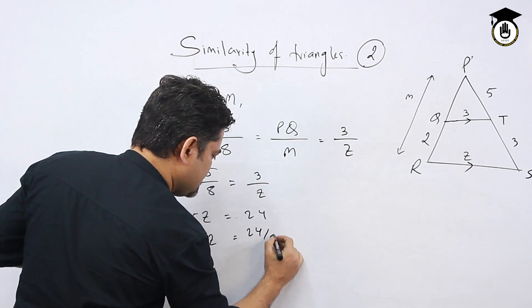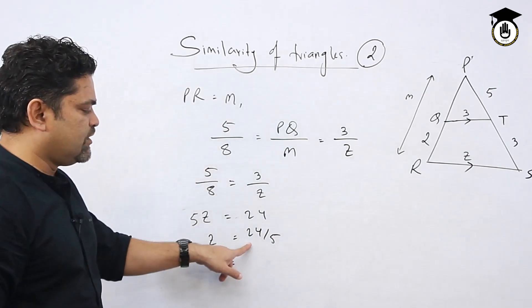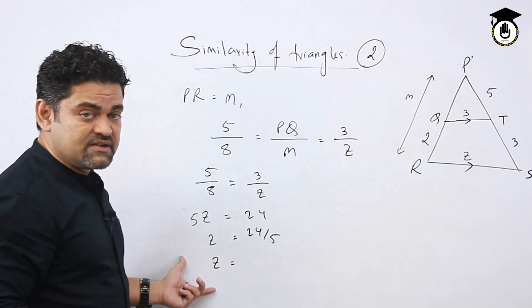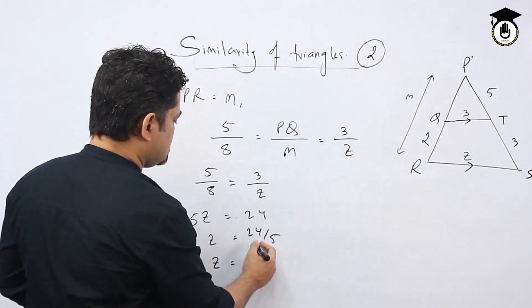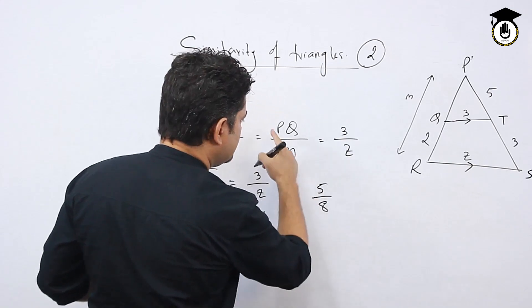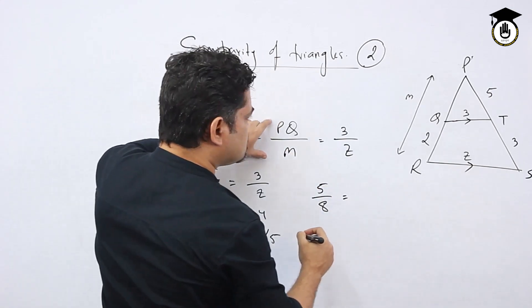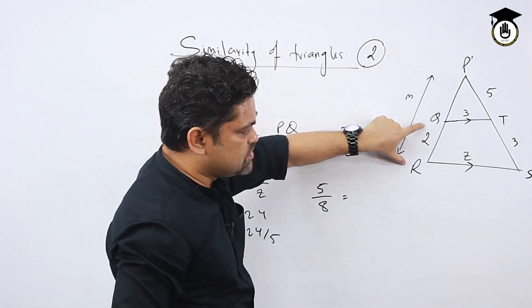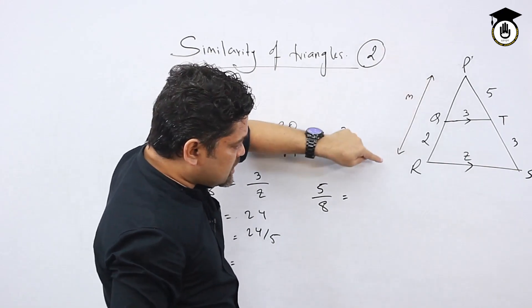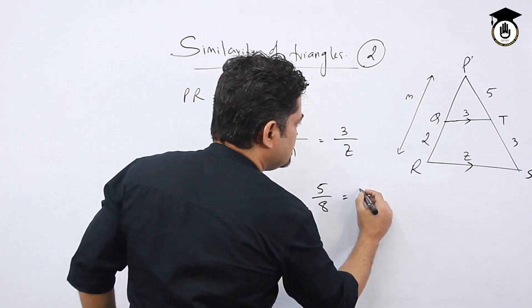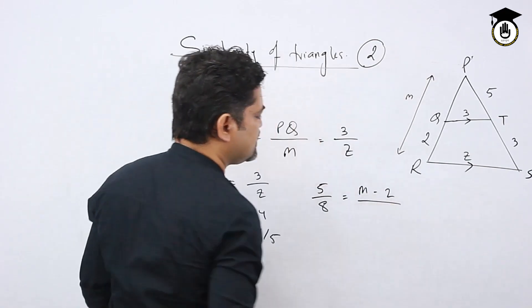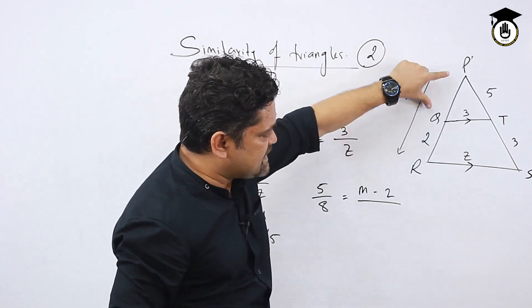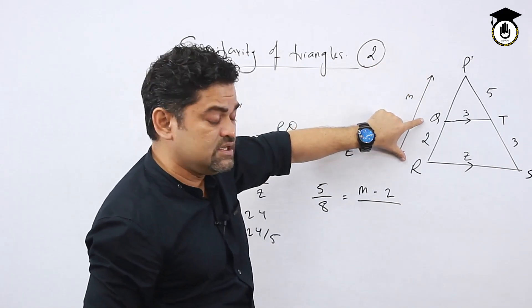So Z equals 24 by 5. You can give the answer as a fraction or decimal depending on what the examiner wants. Now to find PQ: the proportion is 5 by 8 equals PQ by something. The total length is M and up to this part is 2, so PQ equals M minus 2, because from the total length I remove QR.